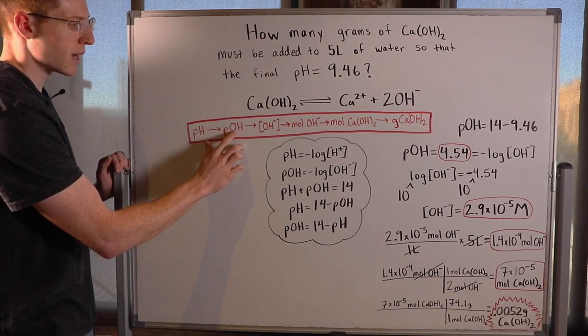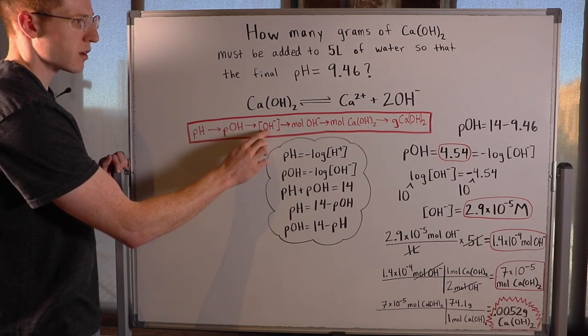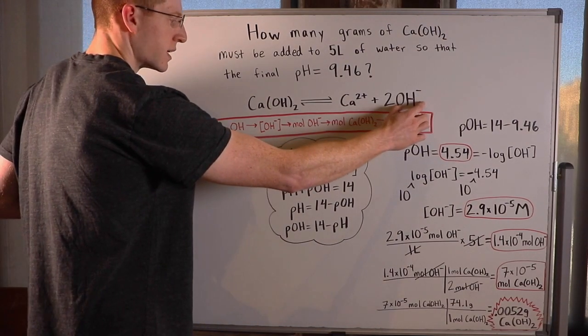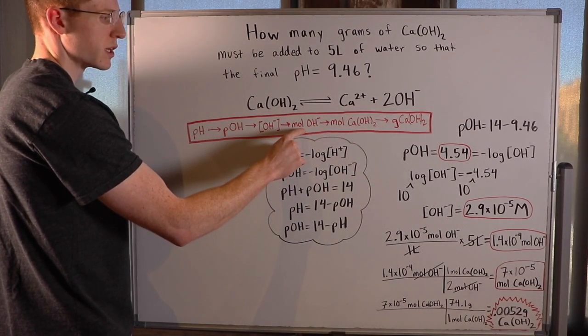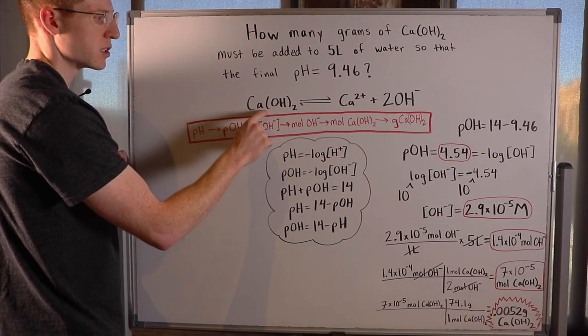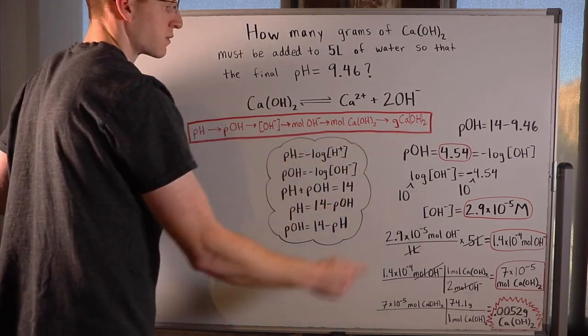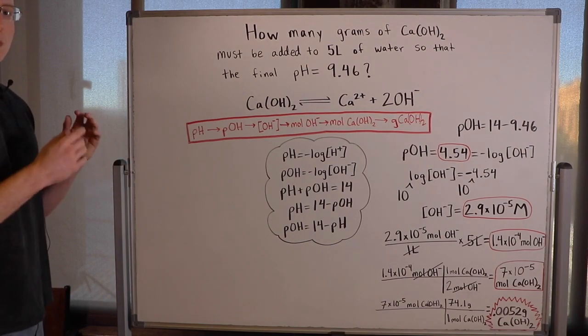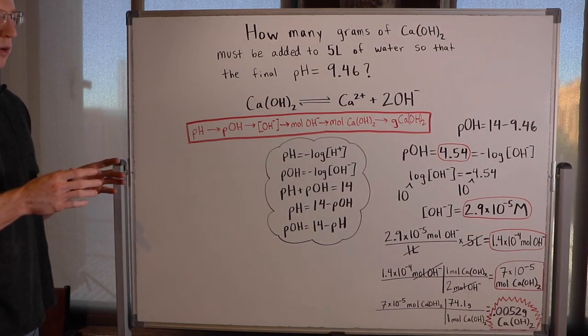So I started out by taking that pH, turning it into the pOH, then I was able to find the concentration of OH minus, which was then converted into moles of OH minus. Then I was able to convert that to moles of calcium hydroxide, and then finally grams of calcium hydroxide. So it seems complicated and overwhelming, but let's walk through this slowly.